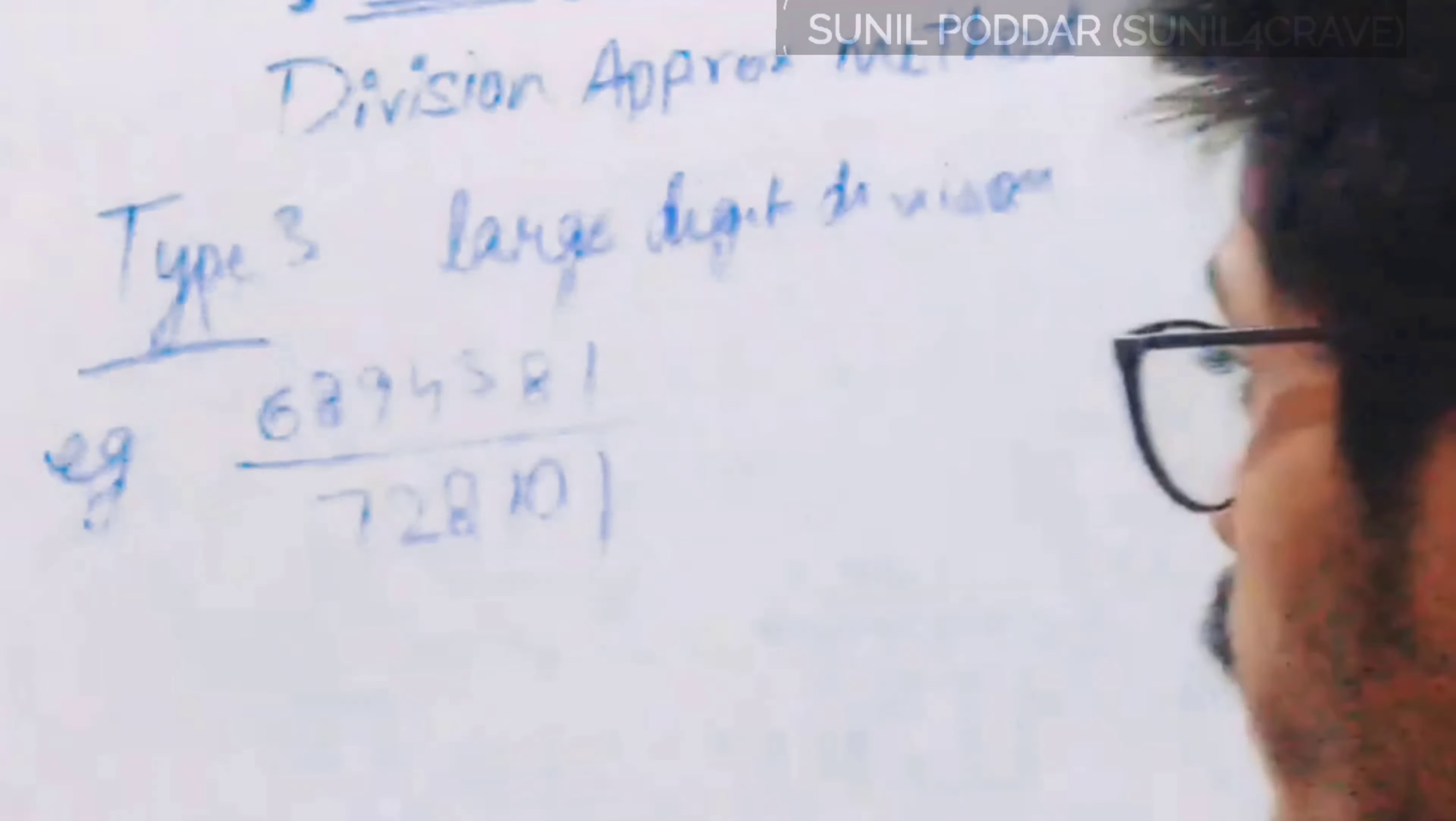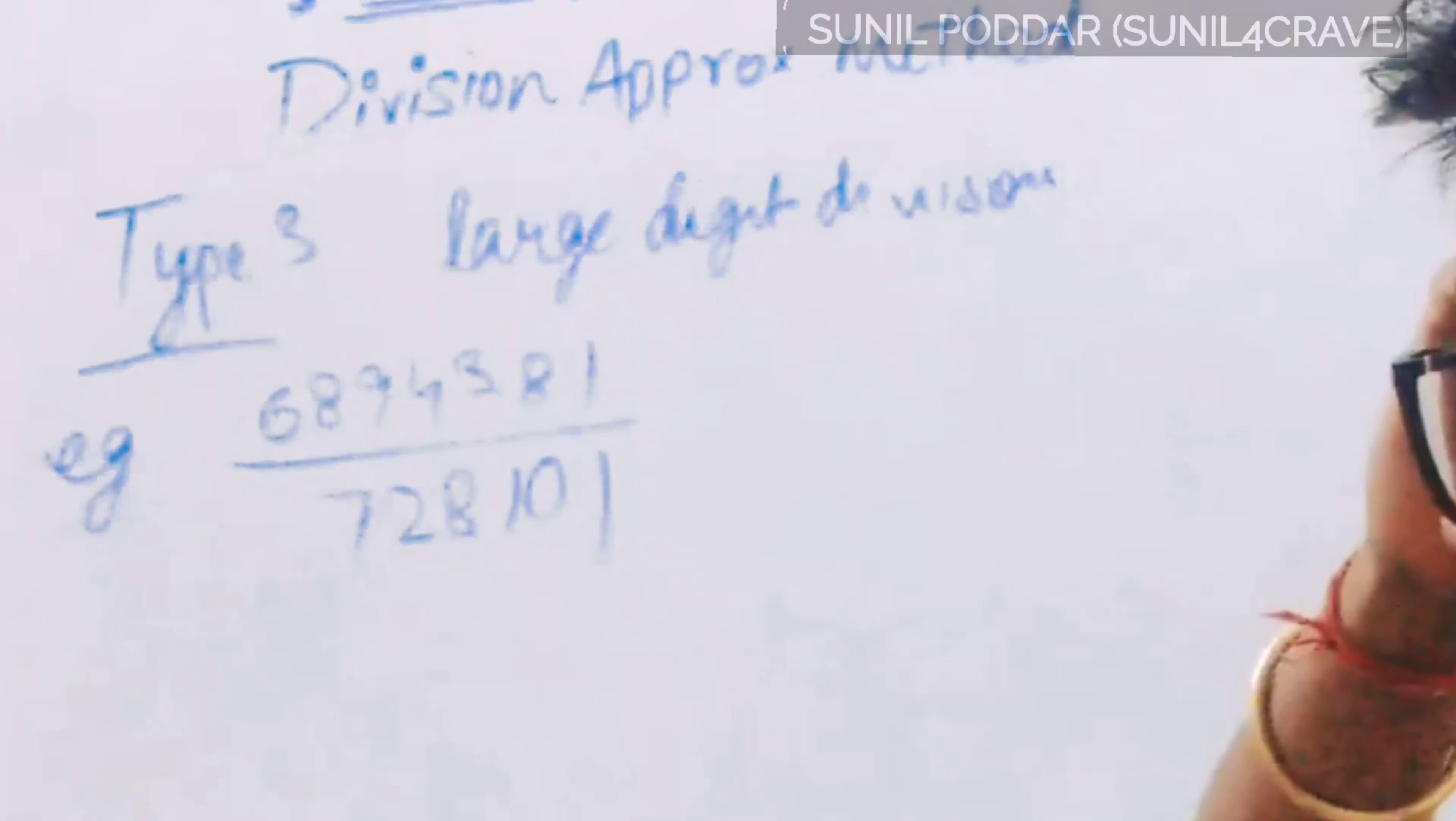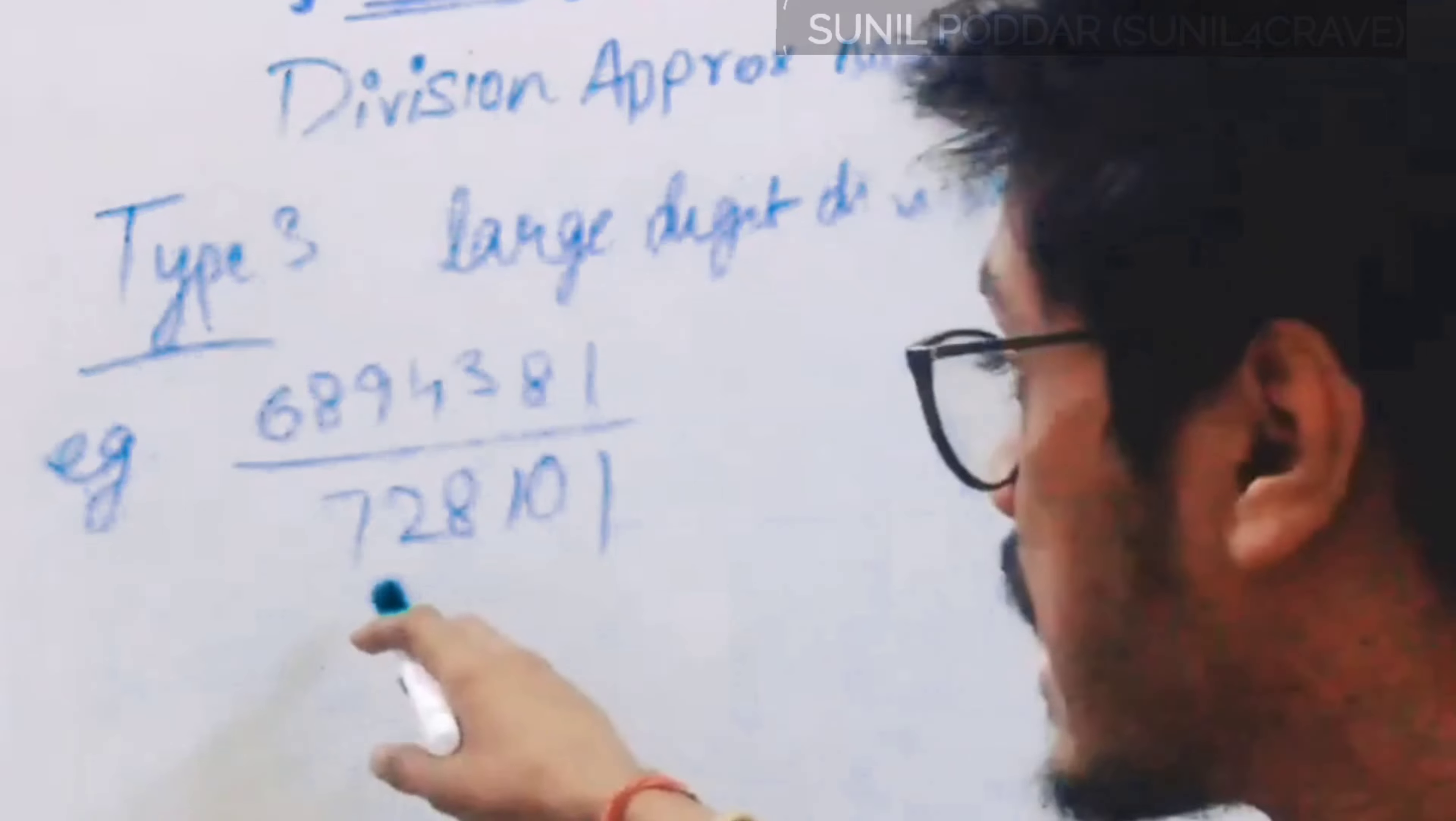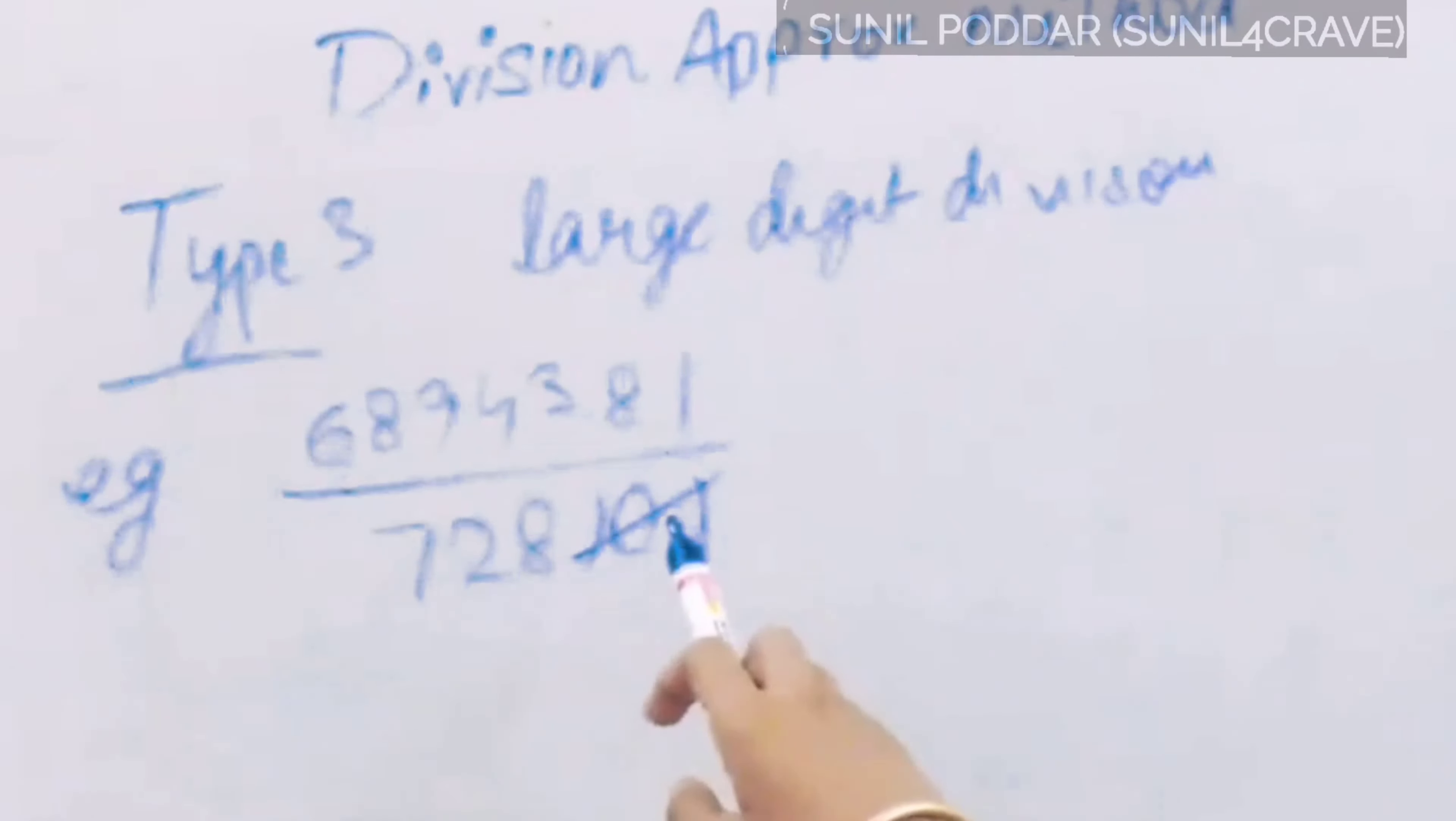Here we have to divide that long digit with that long digit. I will tell you a method so that we get nearly or approximate answer. As we neglected from numerator, we also have to neglect same last 3 digits from numerator. Means 381 we have to neglect.